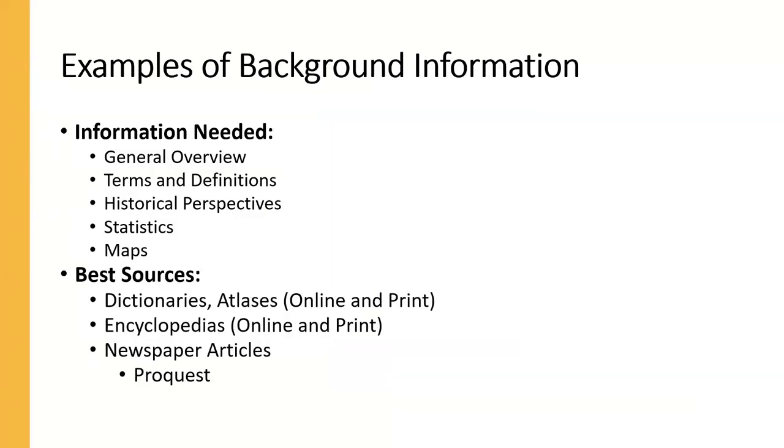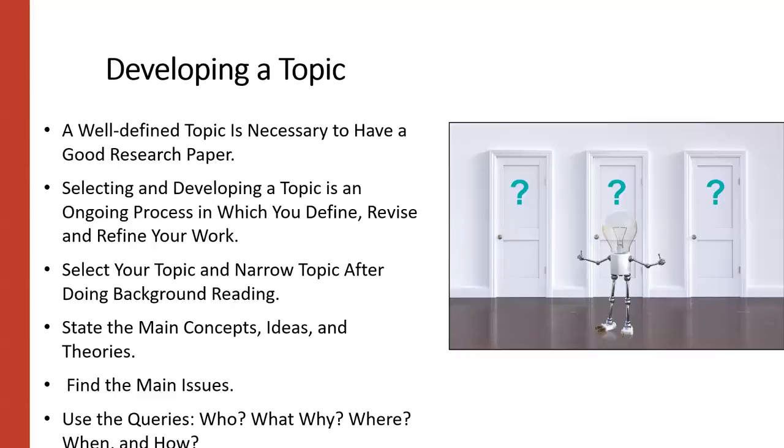Some examples of background information are general overviews, terms and definitions, historical perspectives. Some of the best sources to use would be dictionaries, encyclopedias, sometimes newspaper and magazine articles would be useful as well. You can get some pretty good dictionaries and encyclopedias online in addition to the traditional print.